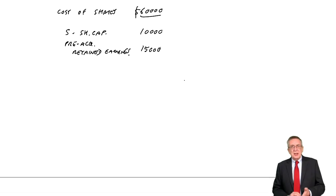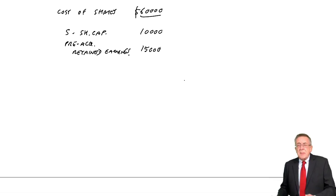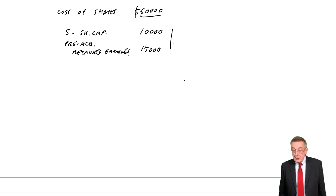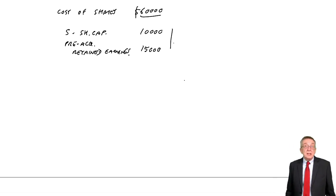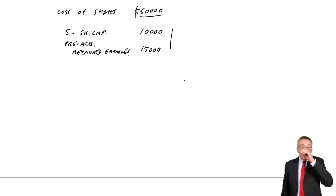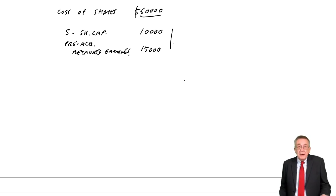At the date they bought the shares, S's balance sheet would have had share capital and retained earnings totalling £25,000, so the net assets of S would have been £25,000. So why have we paid £60,000?